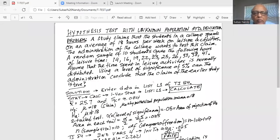Hypothesis test with unknown population standard deviation. Problem: A study claims that the students in a college spend on average of 18 hours per week on leisure activities. The administration of the college wants to test this claim. A random sample of 10 students give the following hours of leisure time. Assume that the time spent in leisure activities is normally distributed. Using a level of significance of 5%, can the administration conclude that the claim of the earlier study is true?